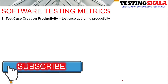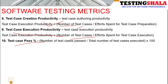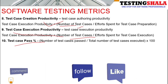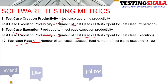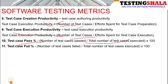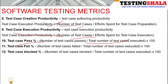The eighth metric is test case creation productivity, which checks the productivity of a tester who creates test cases. A similar metric exists for test case execution. The tenth metric is test case pass percentage: number of test cases passed divided by number of test cases executed. The fail rate is similarly calculated — number of test cases failed divided by test cases executed. For example, if 10 test cases fail out of 100 executed, the fail rate is 10%.